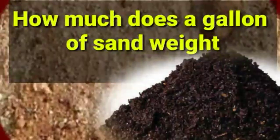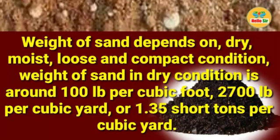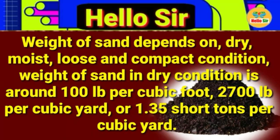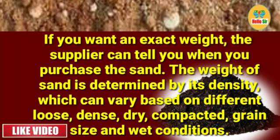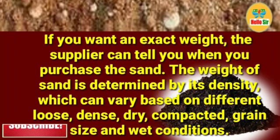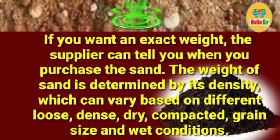Today we'll discuss how much does a gallon of sand weigh. The weight of sand depends on its dry, loose, and compact condition. Weight of sand in dry condition is around 100 pounds per cubic foot, 2700 pounds per cubic yard, or 1.35 short tons per cubic yard. The weight of sand is determined by its density, which can vary based on loose, dense, dry, compacted, grain size, and weight condition.